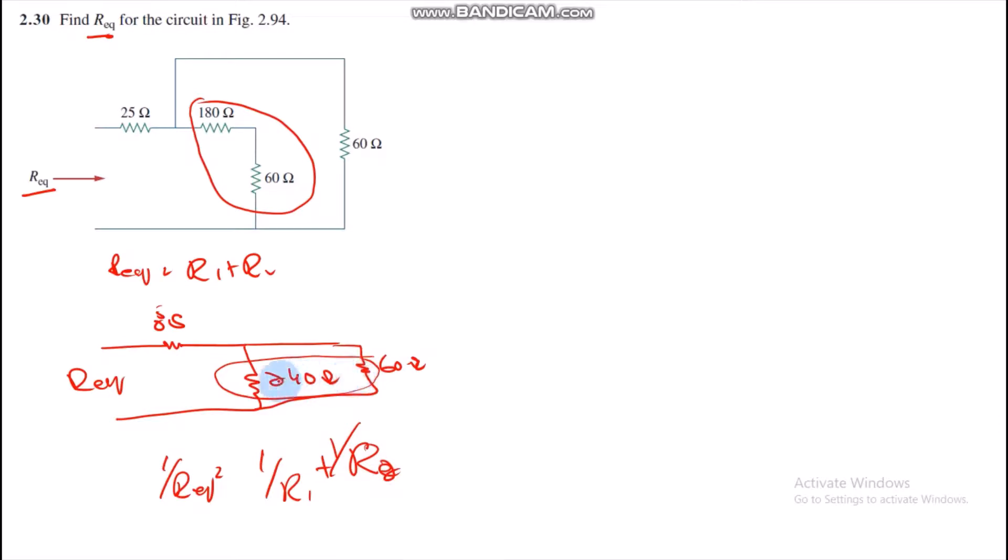If we consider R1 and R2, it is parallel. If we take two parallel resistances, we can find R-equivalent. If we look at this parallel resistance, we can calculate R-equivalent. Now let's start with these two resistances.